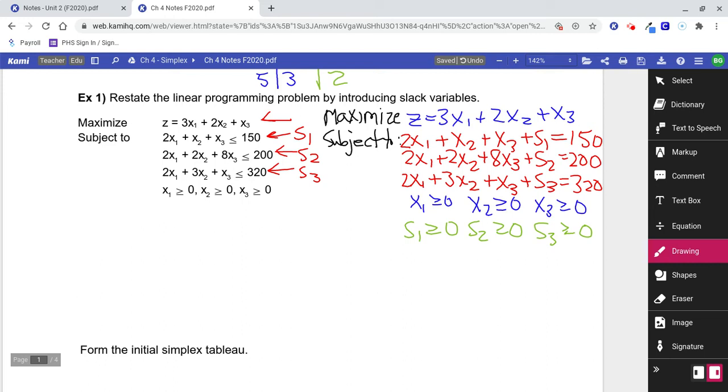So restate the linear programming problem by introducing slack variables. So literally all I did was change my inequalities into equations. That's it. Nothing tough about that.